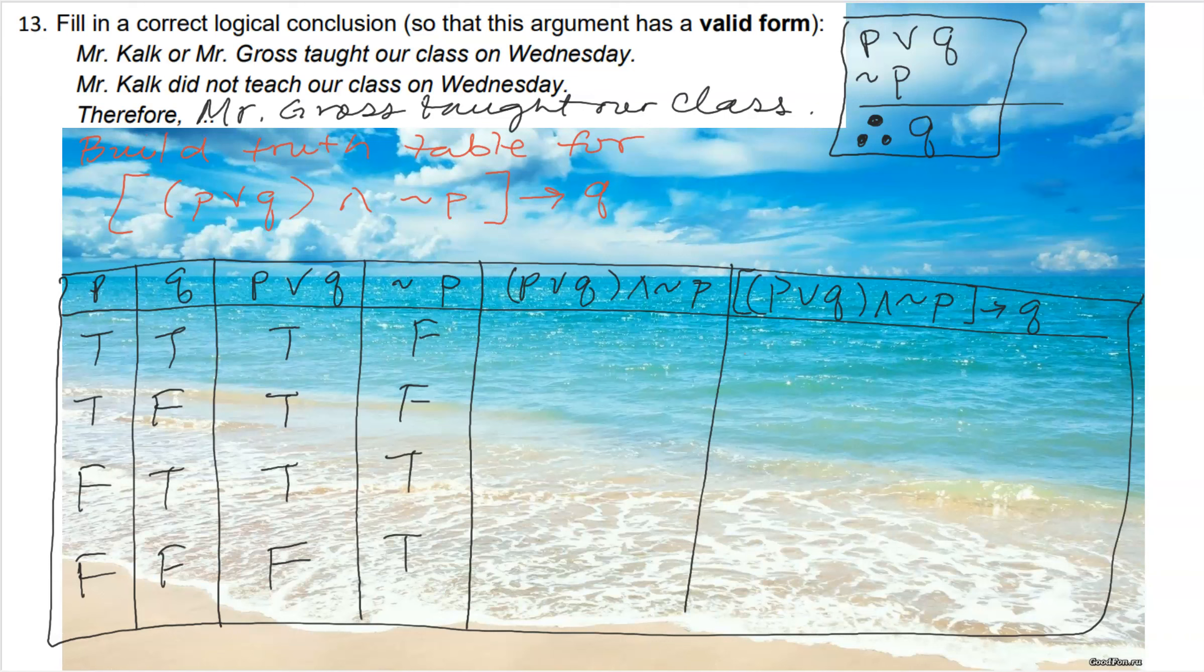And now we are going to combine the two statements together with the connector AND. So true and false would be false, true and false would be false, true and true is true, and then false and true is false.